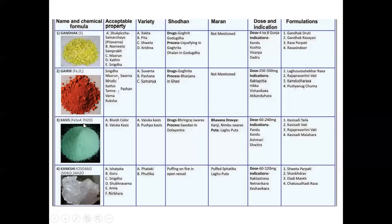Kasis, FeSO4·7H2O. The properties: Bluish in color and Valuka Kasis. The types are Valuka Kasis and Pushpa Kasis.